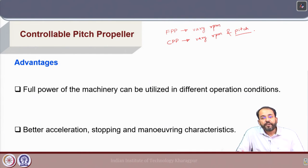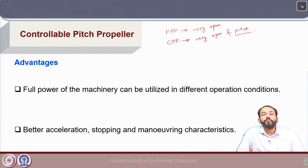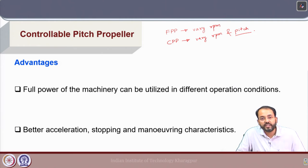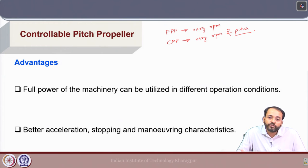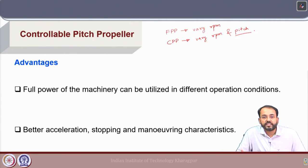Having a controllable pitch propeller gives greater control over thrust performance for different conditions, which can be used for better acceleration, stopping, and maneuvering characteristics of the ship. These are very useful for vessels like tugs, ferries, and naval ships which require very good acceleration and maneuvering characteristics.